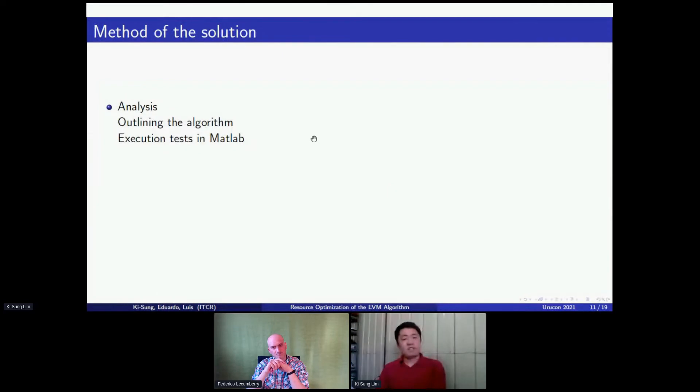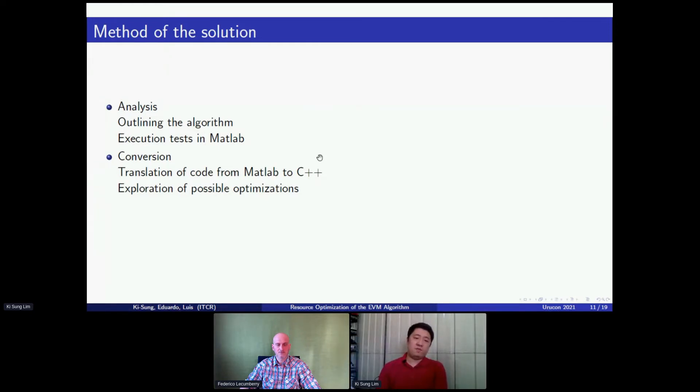Now explaining the method to reach our solution. First, we did an analysis outlining the algorithm and the main components of the algorithm, and then we executed some tests with the source code of the project that we were based on in MATLAB. For the preparation of the algorithm for an embedded system, we translated or converted the code from a high-level language to a low-level language. In this case, MATLAB to C++. We considered also the use of the language C because it's commonly used in embedded architectures, but the problems that we have with the language is the lack of support of computer vision libraries or complete computer vision libraries compared to the language C++.